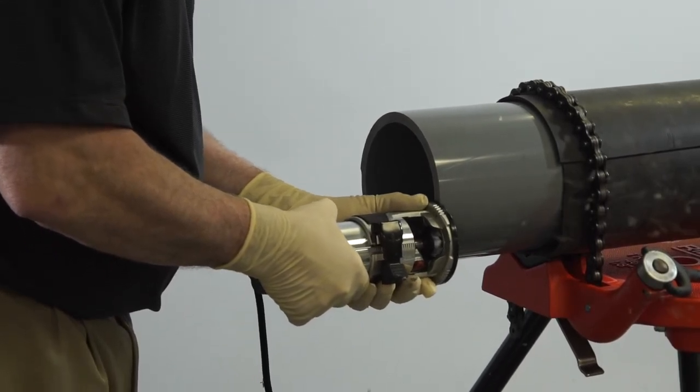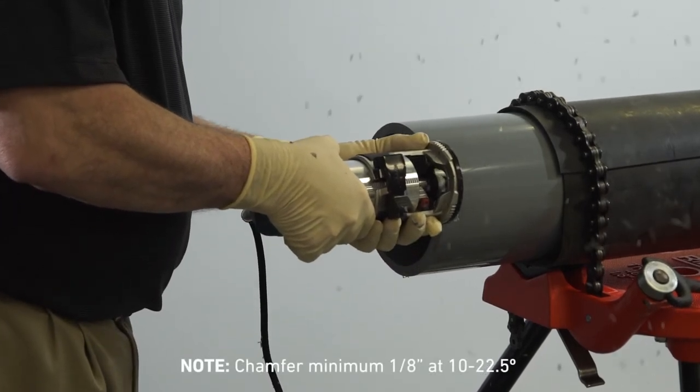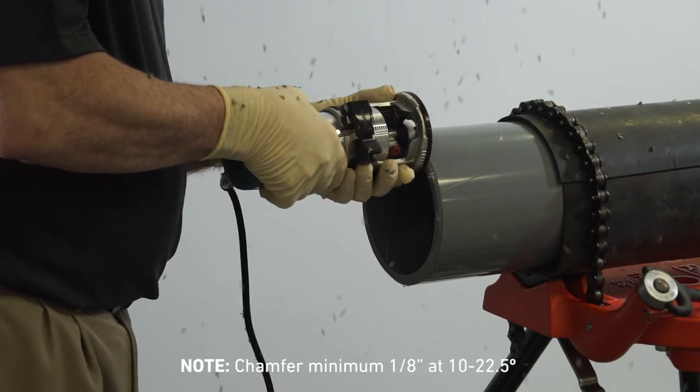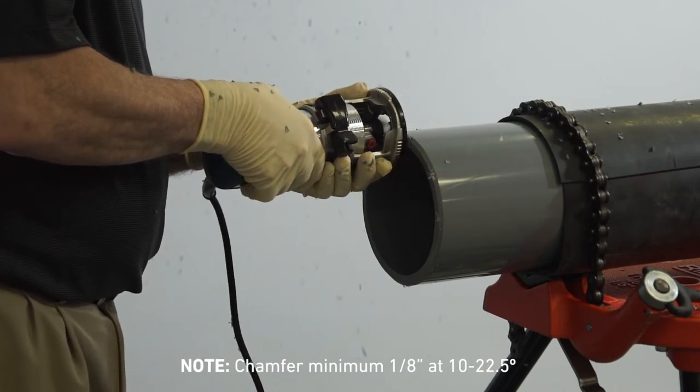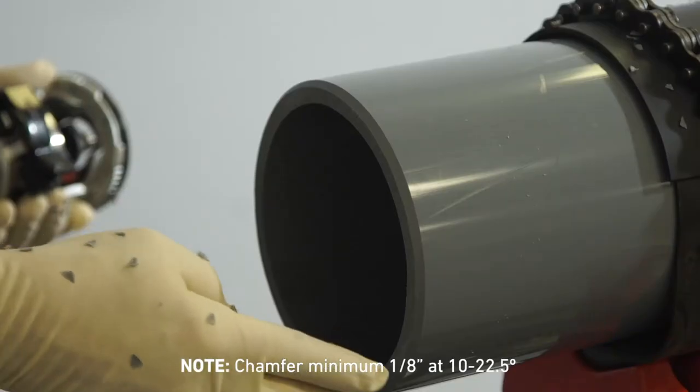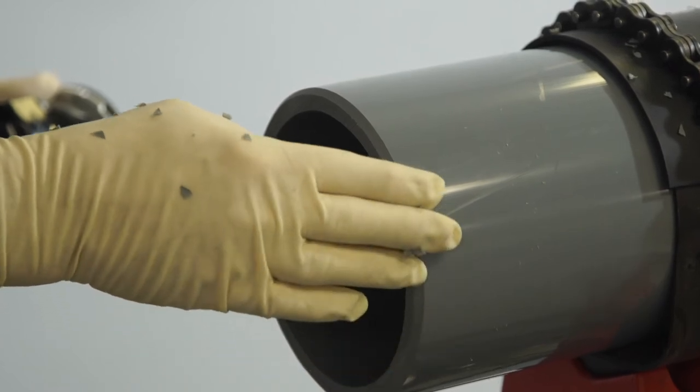A 10 to 22 and a half degree chamfer with a minimum width of one-eighth of an inch must be placed at the end of the pipe to ease insertion of the pipe into the fitting socket. This chamfer will minimize the chance that the edges of the pipe will wipe away the solvent cement or will scrape softened material surface from the fitting socket during the insertion of the pipe.